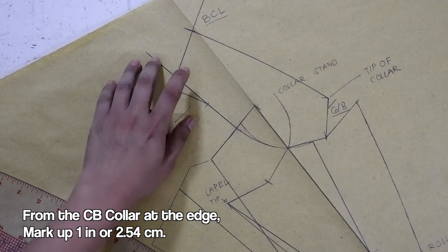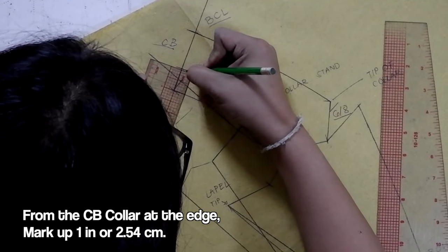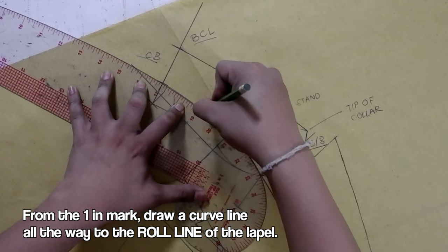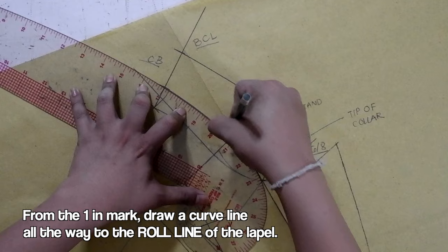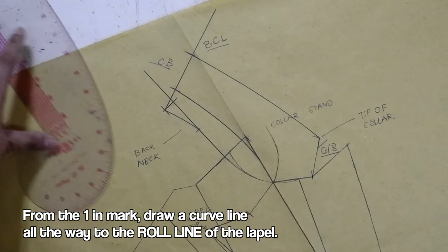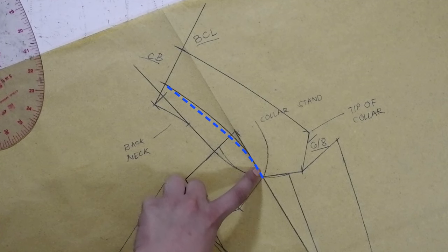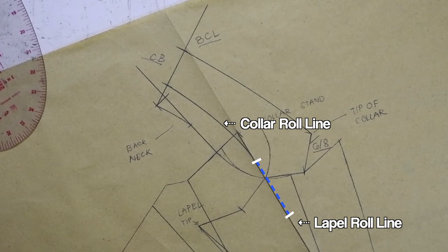From the center back collar at the edge, mark up 1 inch or 2.54 centimeters. Using your curved ruler, draw a curved line all the way down going towards the roll line of the lapel. This heel line at the back is the roll line for the collar. And it should be connected at all times to the roll line at the lapel.